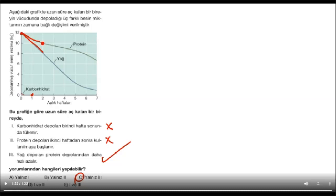Burada çok da bir biyoloji bilgisi yok değil mi? Grafiği konuşturuyoruz. Volkan sen anlatsan? Birinci şeyde karbonhidrat depoları birinci hafta sonunda tükenir diyor, ama zaten birinci hafta olmadan en başta tükenmiş, yanlış. İkincisinde protein depoları ikinci hafta sonunda kullanılmaya başlandı diyor, daha öncesinden başlamış, o da yanlış. Yağ depoları daha hızlı azaldığı için sadece 3 doğru. Bu kadar, basit yani.